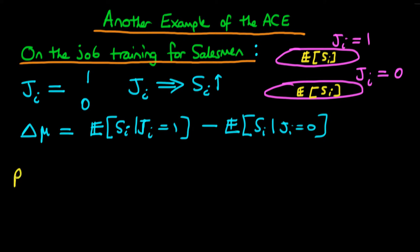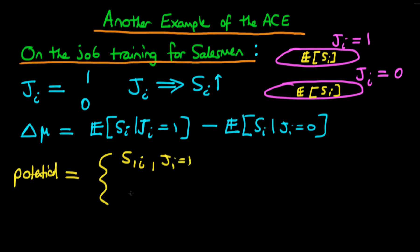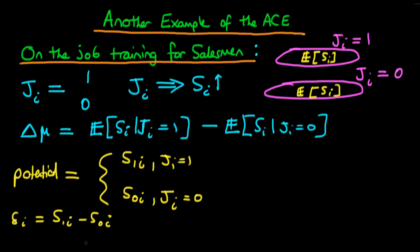Much like before, we can define the potential level of sales for each individual candidate, and there are going to be two different potential levels of sales. There's the level of sales which that individual would have achieved if they had received on-the-job training — that's S1i, when Ji equals one. And there's another potential level of sales: the level that individual would have achieved if they hadn't received on-the-job training — that's S0i.